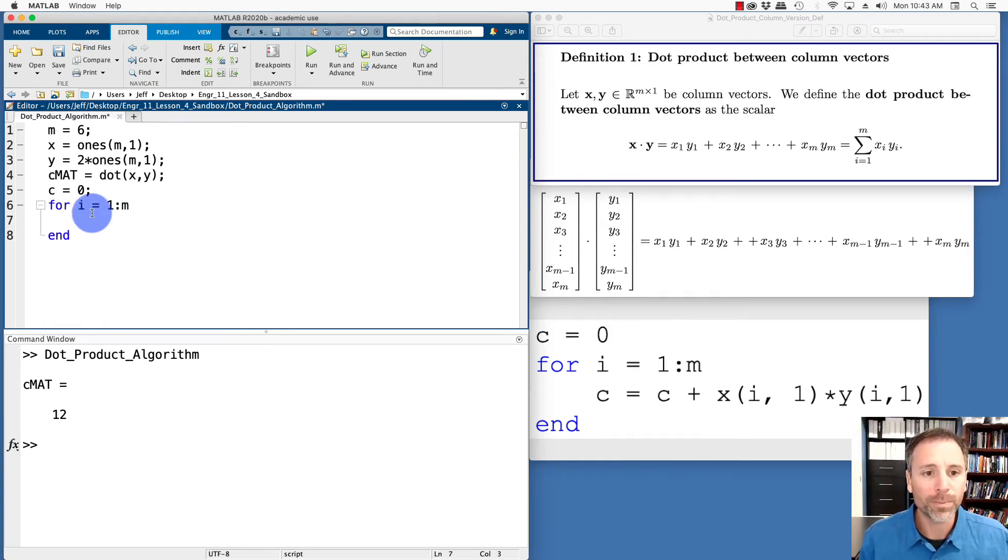Let's go ahead and end our for loop. And then what we're going to do is use the assignment operator. We're going to take the previous value of c and add the product. Let's just go ahead and put x(i,1) times y(i,1). So in each iteration, I'm going to go back to the previous value of c, and then I'm going to add the product of the current entries of x and y to the last value.